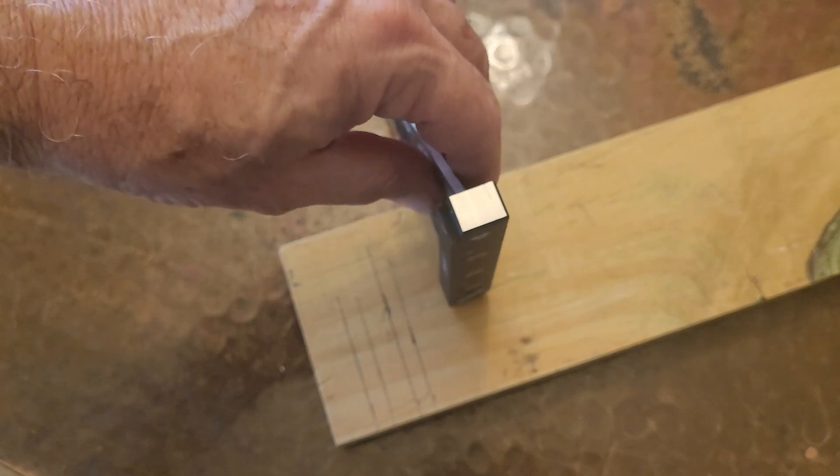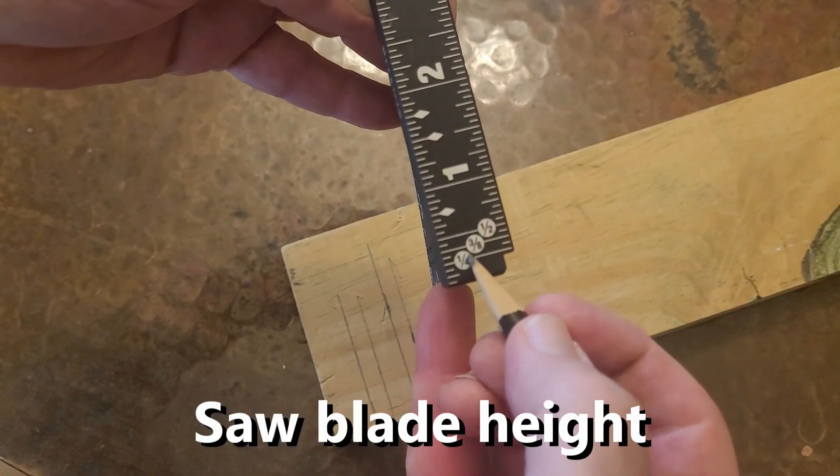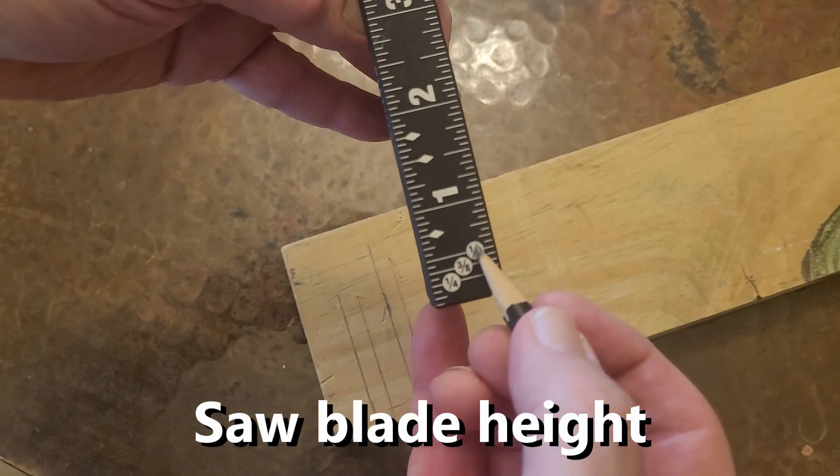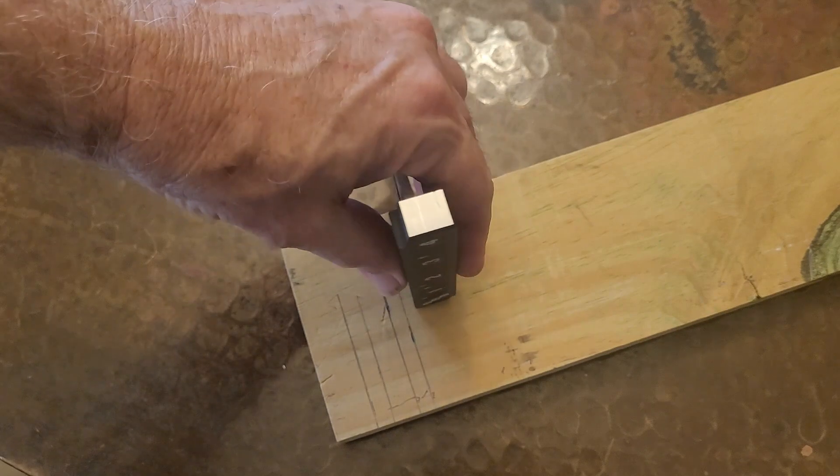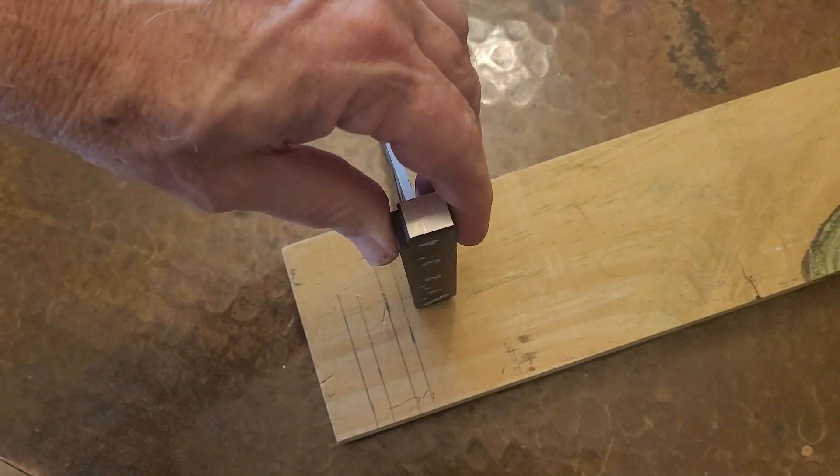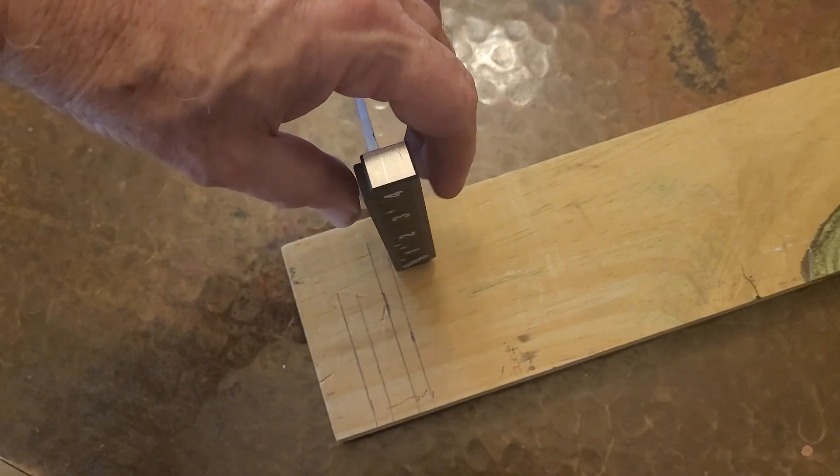You can put this down on its edge and you can see some markings: one-fourth, one-third, one three-eighths, one-half, and on up. So you can set your saw blade. If you have a table saw, for instance, you can set the height with this using the side markings.